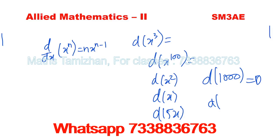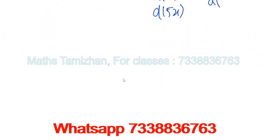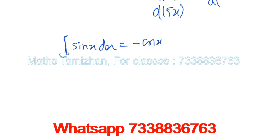Now the basic x power n differentiation formula: if we differentiate x power n, we bring the power to the front and subtract 1 from the power. We also know the differentiation of sin and cos. The integration of sin x is minus cos x. That is: integral of sin x dx equals minus cos x.